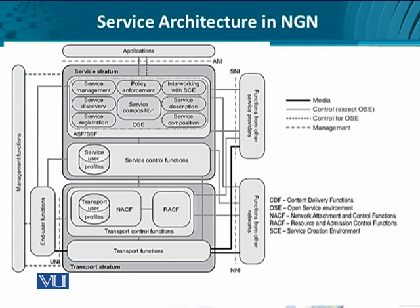Some of the functional entities to name are: service composition, service description, service management, service discovery, and service registration. The policy enforcement and the interworking with other service creation environments are the additional responsibilities within the scope of the open service environment. We can go from service composition or service creation on one end, followed by service description and then service registration by the service provider. Service discovery can then be used by the service solicitor — someone who wants to use a service — along with service management, policy enforcement, and interworking with other service creation environments, to look at end-to-end execution.